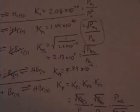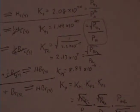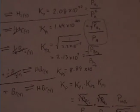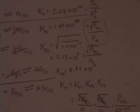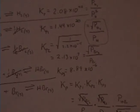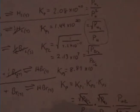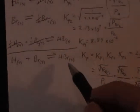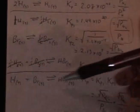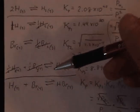So I'm just going to multiply these three together. And what I have is 1.44 times 10 to the 20th times 2.13 times 10 to the 7th times 8.89 times 10 to the minus 6th. And what this ends up being is 2.7 times 10 to the 22nd. So, very, very product favored reaction. But that is how you go about calculating the K for a reaction that can be written as a sum of multiple reactions.